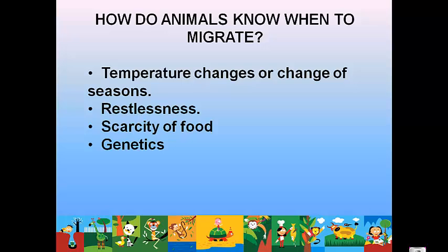Genetics also plays a role. Scientists are not always sure exactly why certain animals migrate, but they believe there must be some genetic trigger that causes them to do so. This happens a lot in reproduction, when an animal returns to its birthplace in order to reproduce.